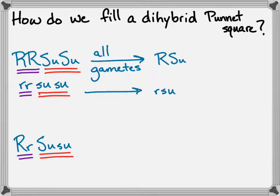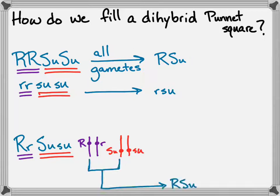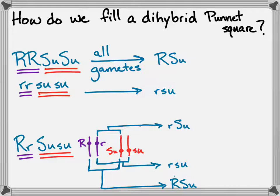For the heterozygous parent, it helps to think about the chromosomes. You have two chromosomes in that parent — one with a big R and one with a little r — and two chromosomes with a big su and a little su. When we divide that up, we could have dominant for both traits, recessive for both traits, or gametes that represent the recessive of one trait and the dominant of the other.